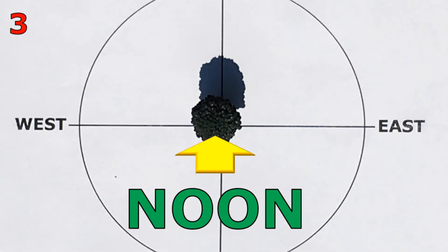And at noon, the sun is directly overhead, and the shadow is the shortest it will be during the day. I'm sure this is what you and your classmates came up with, so keep up the great work, and I'll see you next time.